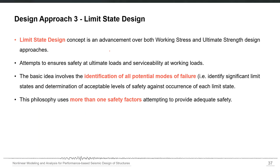The third approach is limit state design, where we identify all potential modes of failure — the significant limit states. A limit state is a possible failure that can occur in the design life of the structure, and we determine acceptable levels of safety against the occurrence of each limit state. It is an advancement over both working stress and ultimate strength design, using more than one safety factor starting from the material level up through cross section, member, and structure level.